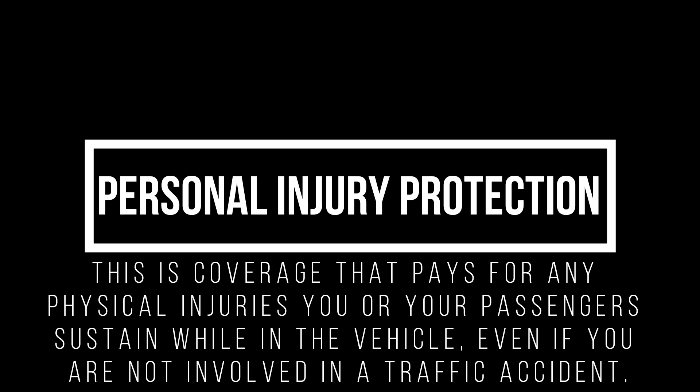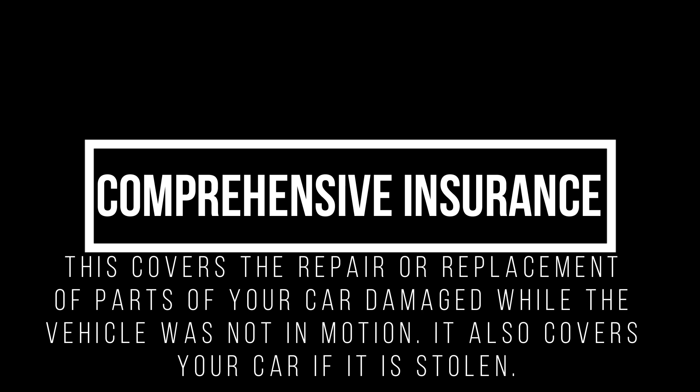Next word is 'comprehensive insurance.' This covers repairs or replacement of parts to your car damaged while the vehicle was not in motion. It also covers if your car is stolen. For example, if your car is parked on the street and a tree branch falls on it, comprehensive insurance covers that. If your car is parked and gets hit by another vehicle or keyed, comprehensive insurance covers your car when it is not in motion.